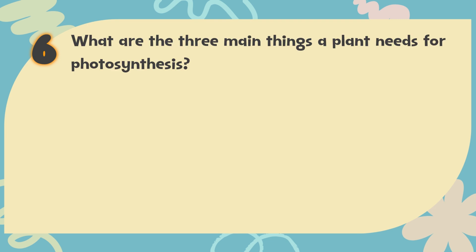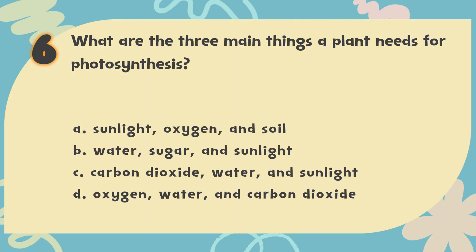Number 6. What are the 3 main things a plant needs for photosynthesis? The choices are: A. Sunlight, Oxygen and Soil, B. Water, Sugar and Sunlight, C. Carbon Dioxide, Water and Sunlight, D. Oxygen, Water and Carbon Dioxide.